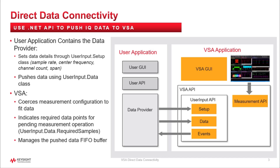From the graphic on the left-hand side, you can see the user application. It may have a GUI and other APIs, but typically would have one API to bring the IQ data into memory — that's where the data provider comes in. Once the application has the IQ data, it's up to that application to fill out the data associated with the IQ data. This includes, within the setup portion of the user input classes, entering sample rates, center frequency, channel count, span, etc. These are the main pieces of information needed to push the data.